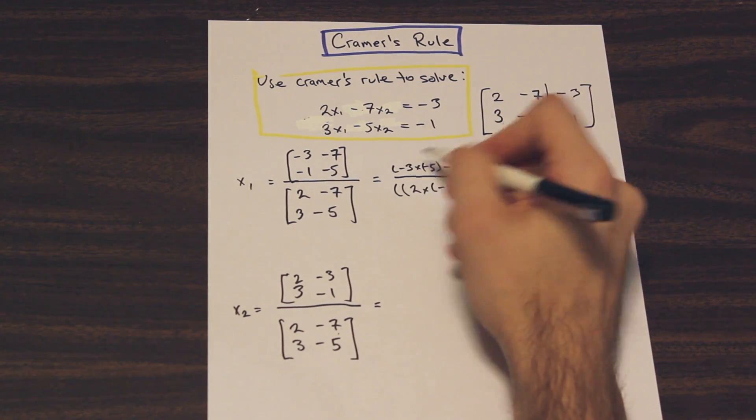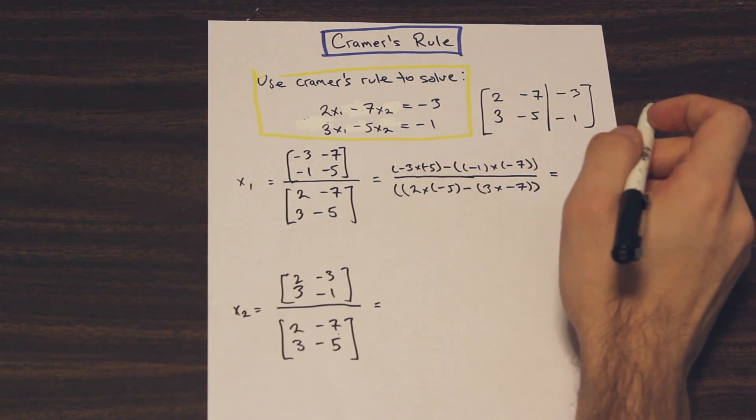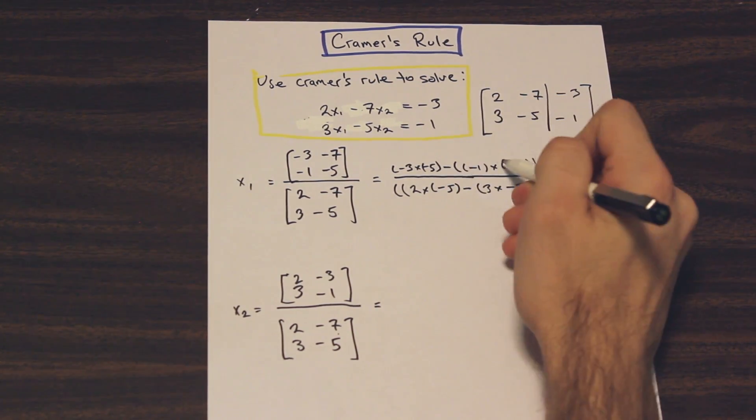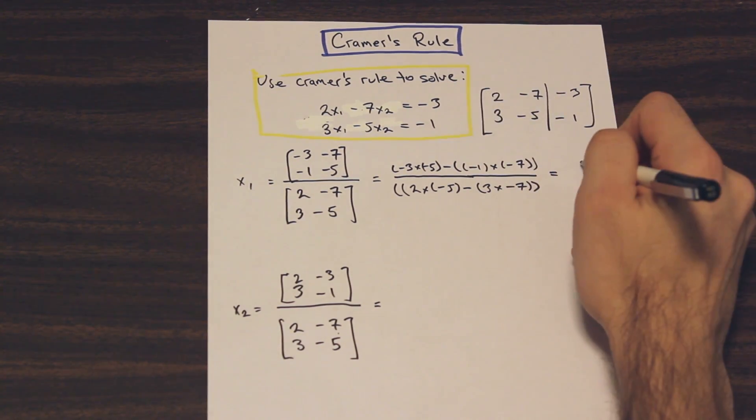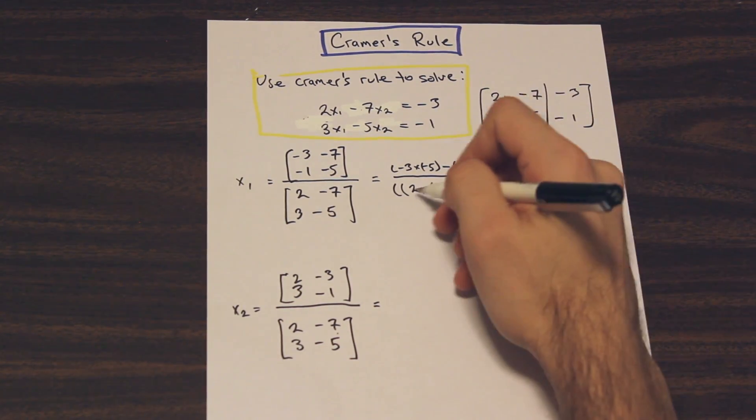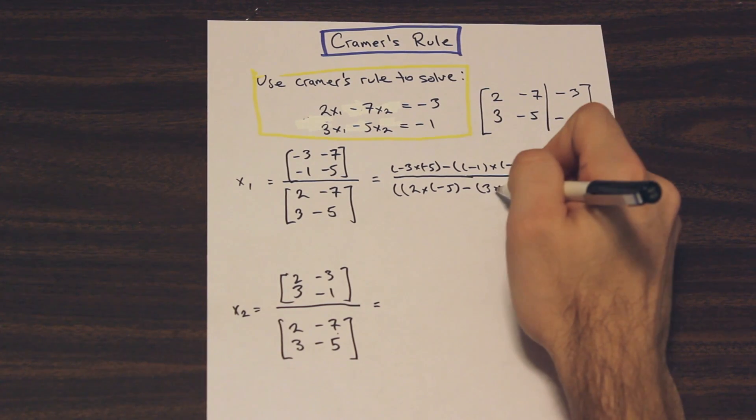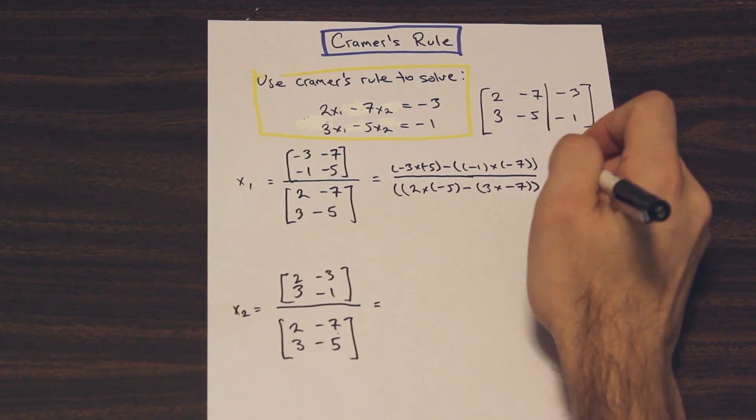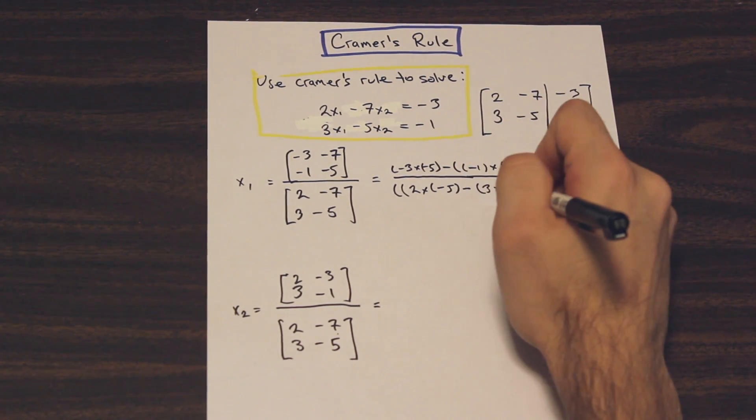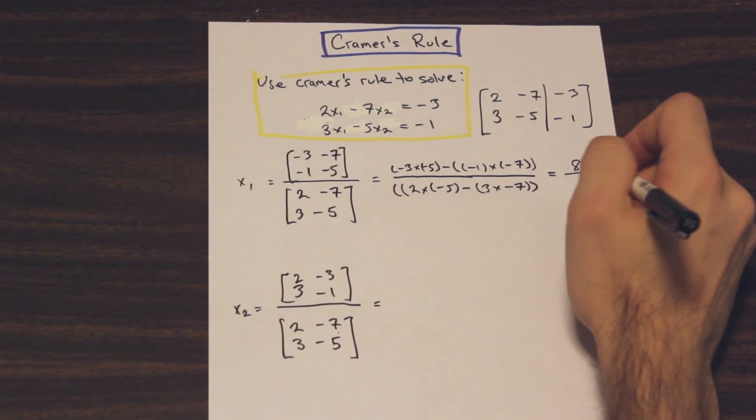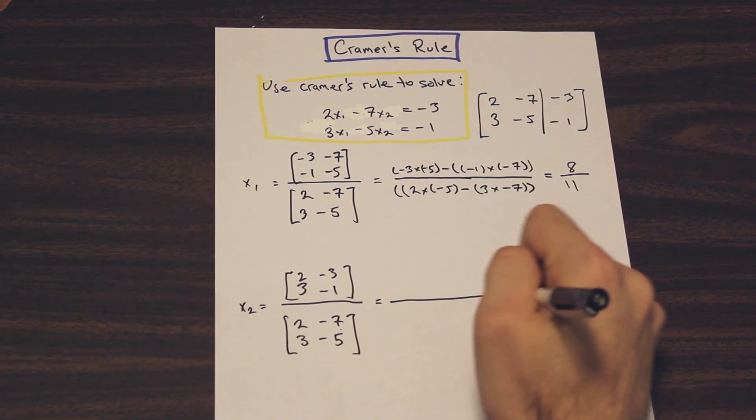So we have negative 3 times negative 5, that's going to be positive 15, minus positive 7. So what's that going to give us? That's going to give us 8. And on the bottom we have negative 10 minus minus 21, right? So that's going to be negative 10 plus 21, and that should give us positive 11. And that's the solution for x1.